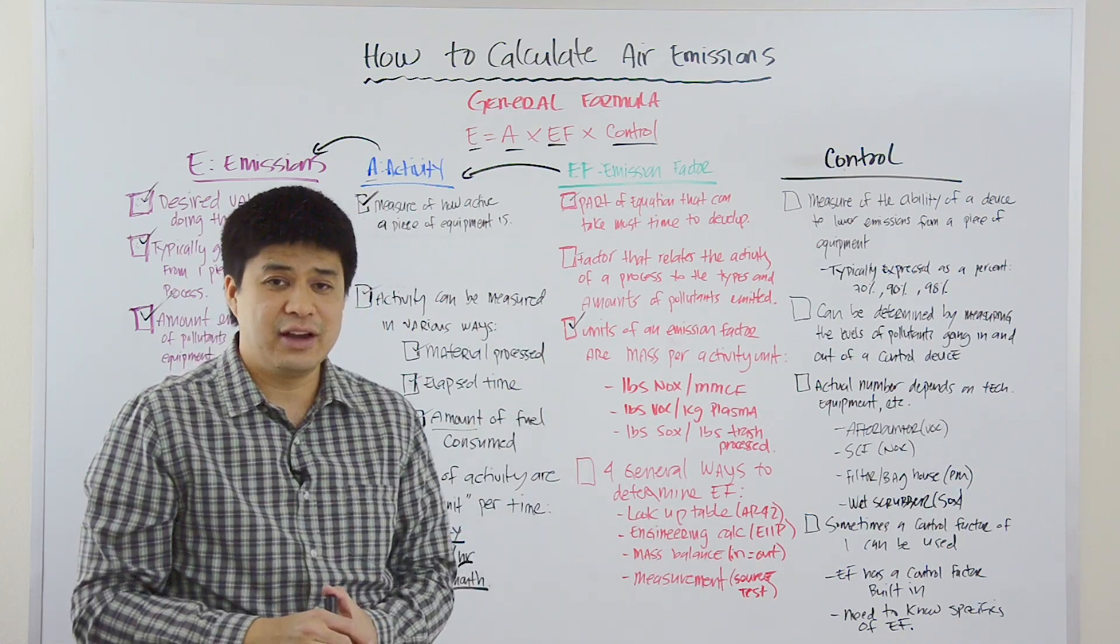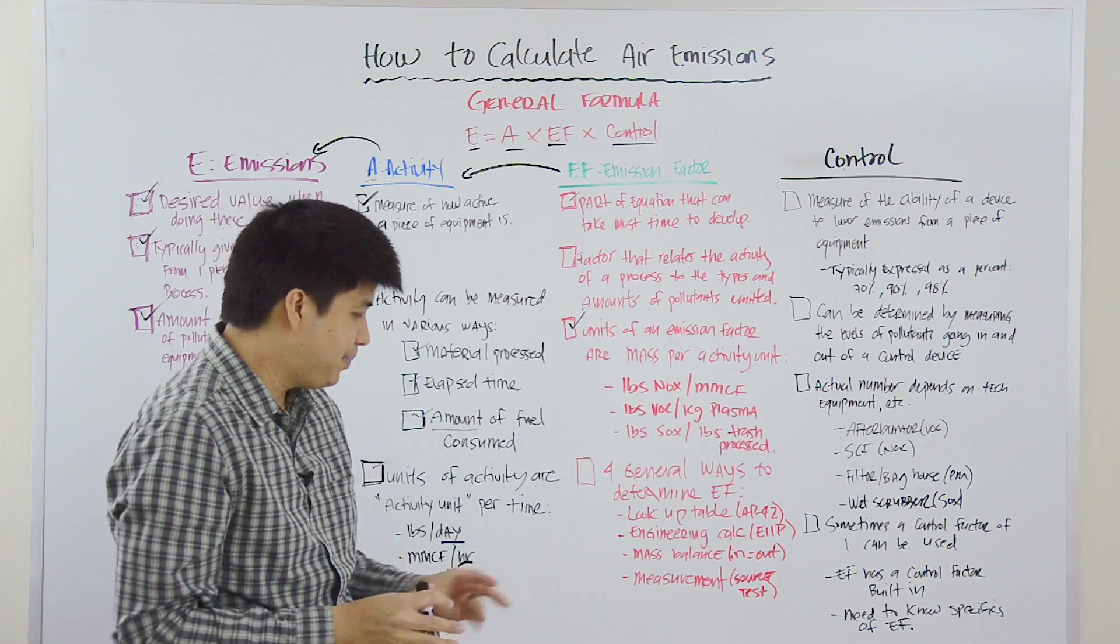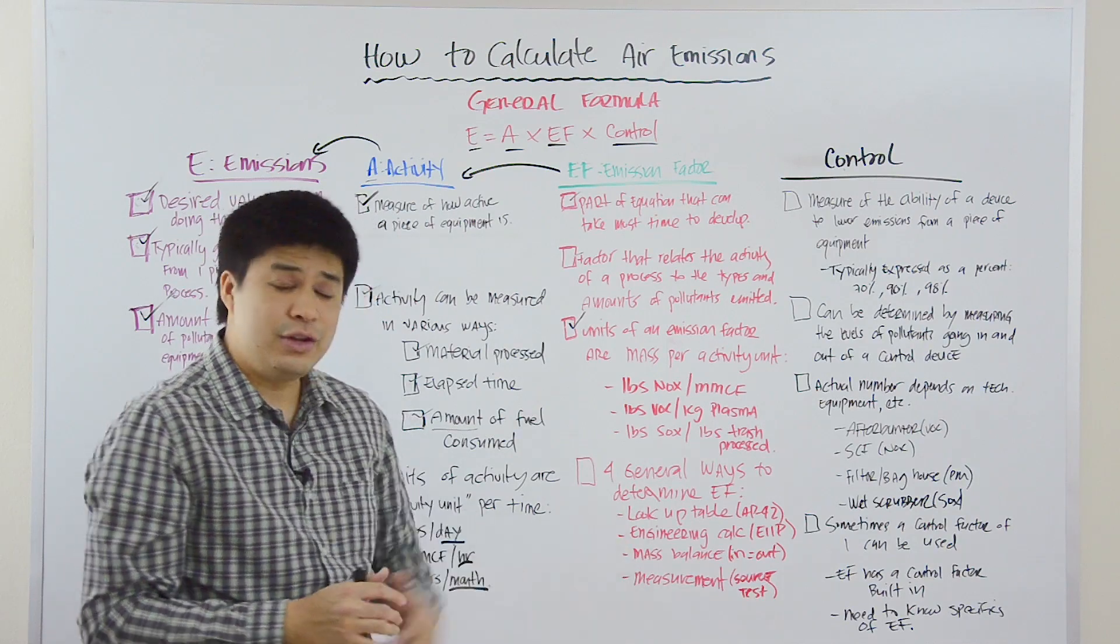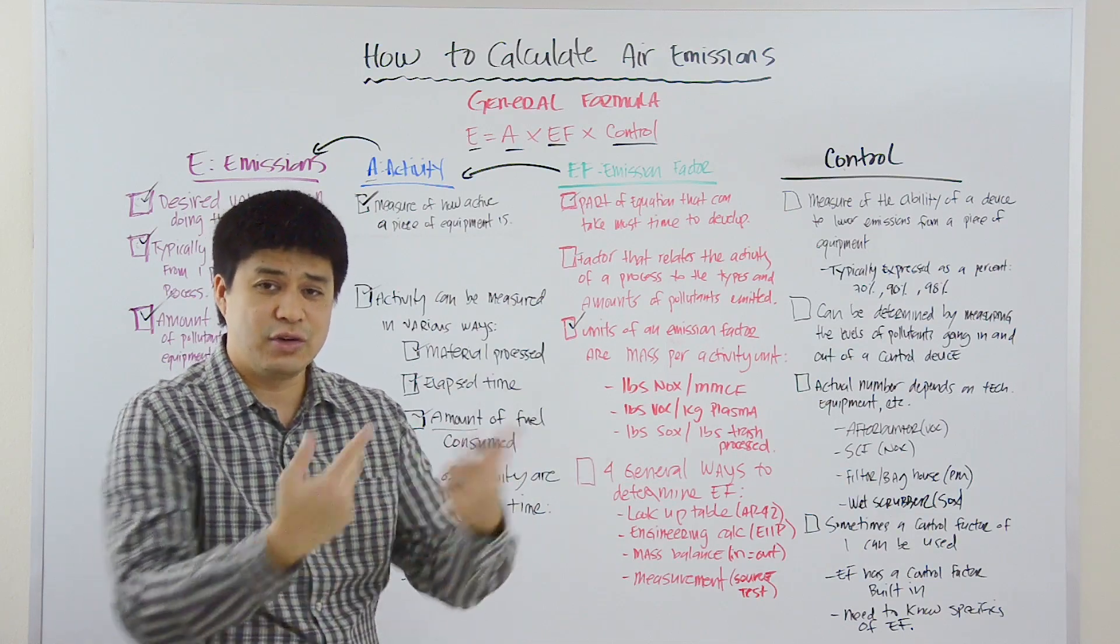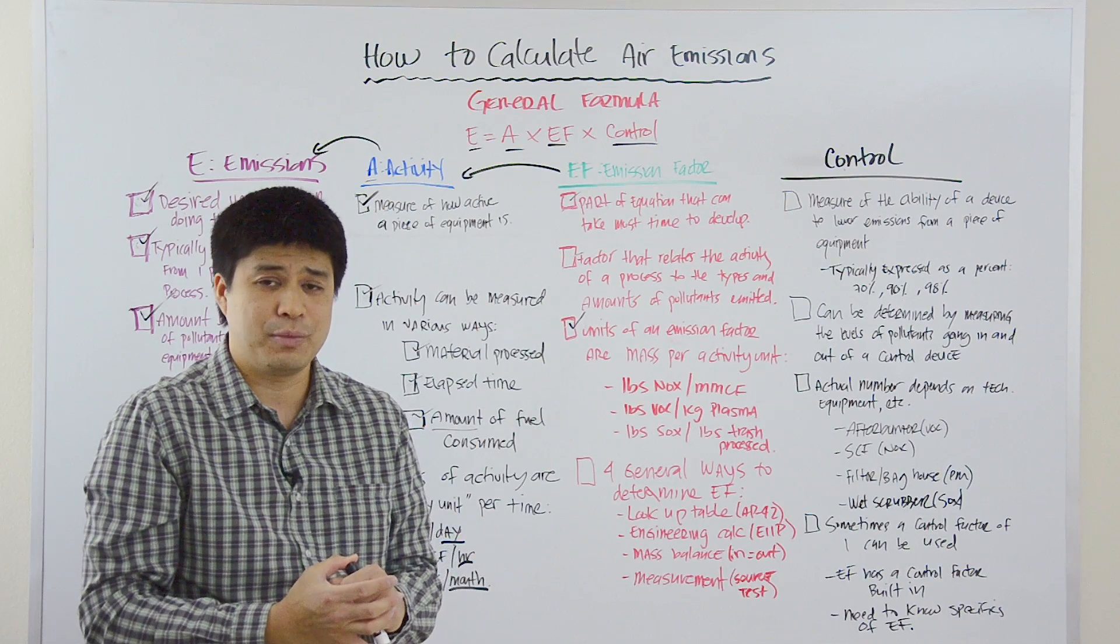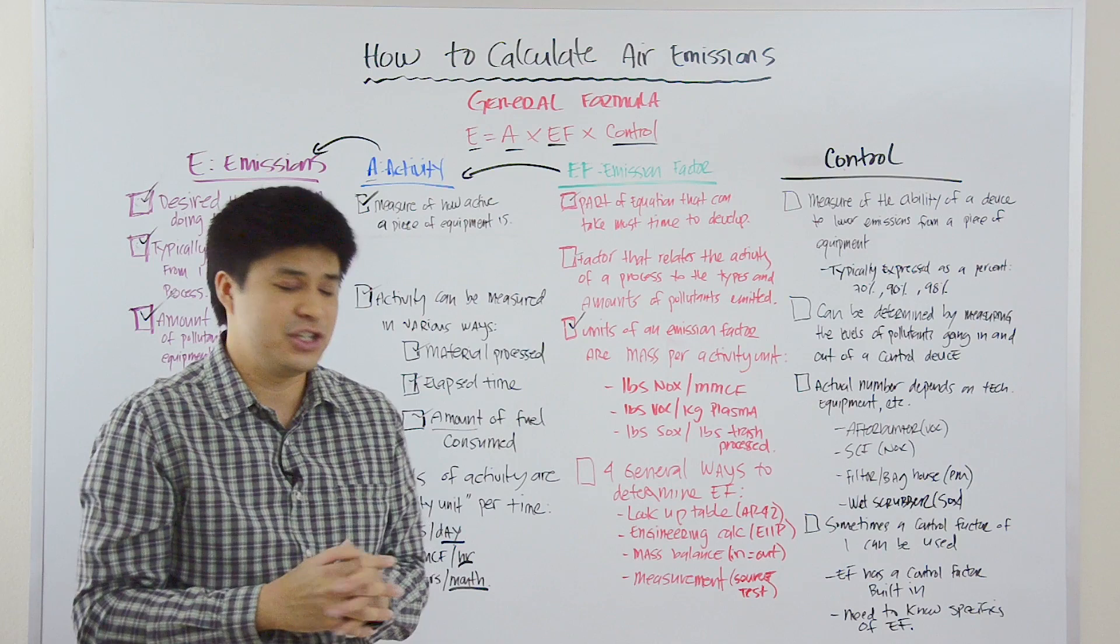Another way is you can do an engineering calculation. And this one is a little bit more detailed, but you can do it. And when you're doing an emission calculation, you're simply using your knowledge or experience with that piece of equipment or process and generally accepted engineering principles to sort of calculate what the emissions are.